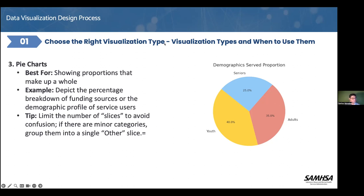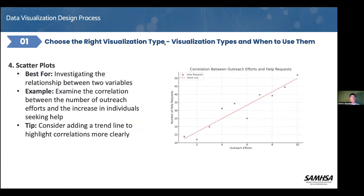Let's go to the next one. The purpose of doing this is to give you a data visualization overview — how you might want to think about visualizing or showcasing your data. In this example we're using scatter plots. This one is best when you are investigating or showing the relationship between two variables.